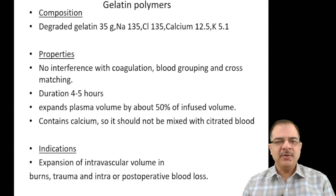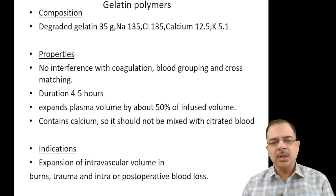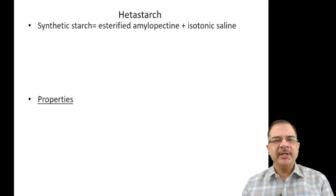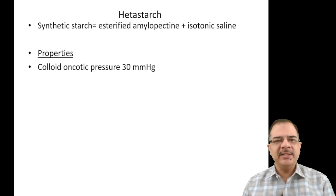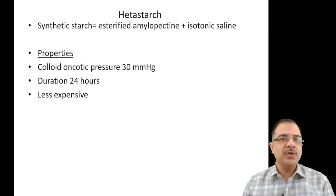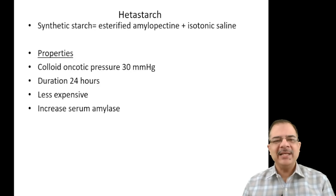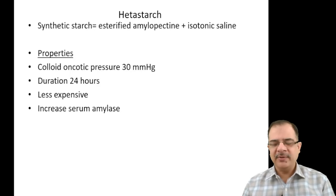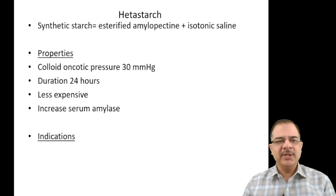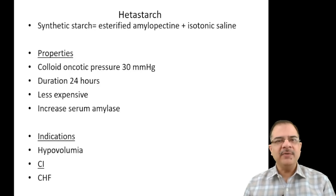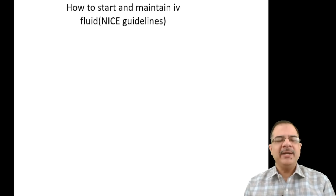Indication for gelatin polymers: expansion of intravascular volume in burns, trauma, or intra/post-operative blood loss. Hetastarch is a synthetic starch with a colloid oncotic pressure of 30 mmHg and a long duration of 24 hours. It is less expensive but can increase serum amylase — use carefully if assessing for acute pancreatitis. Indications: hypovolemia. Contraindication: CHF.